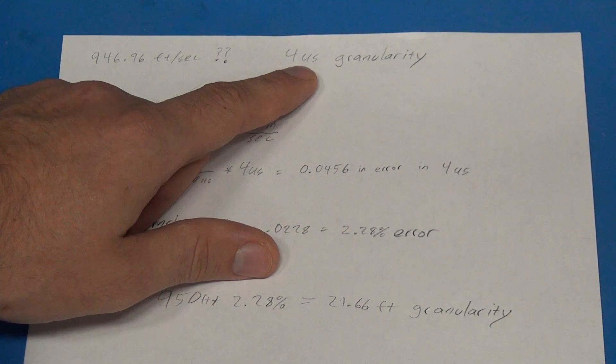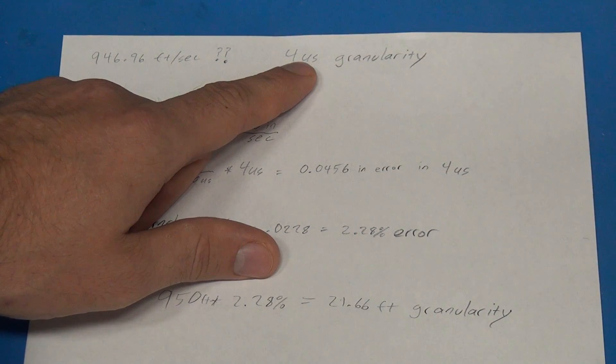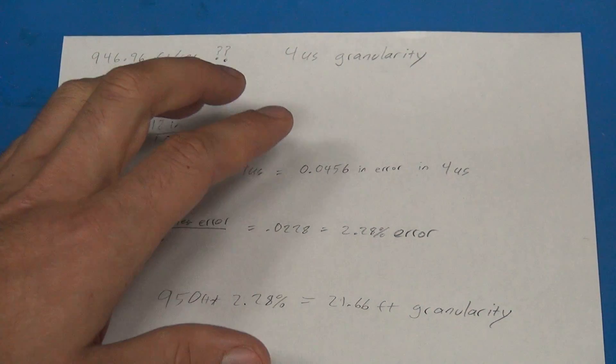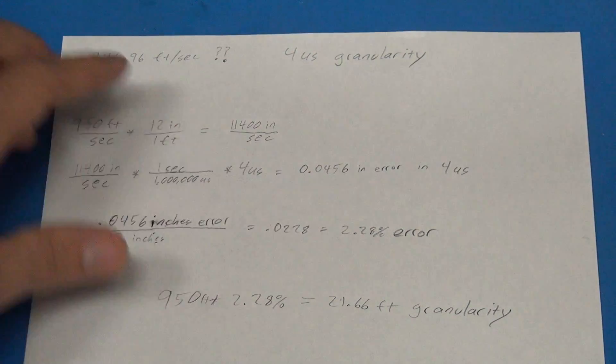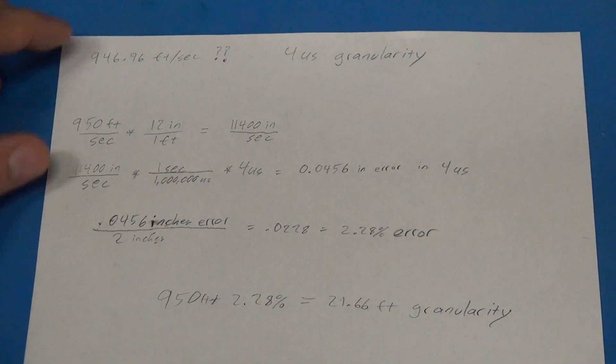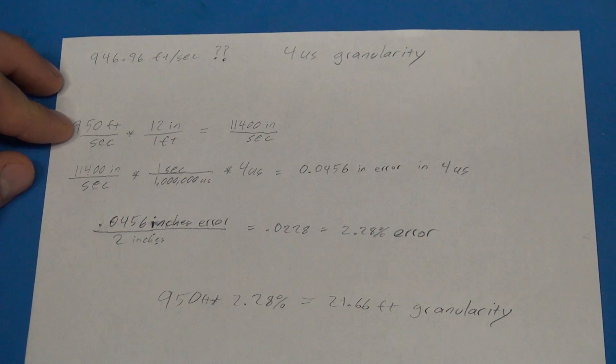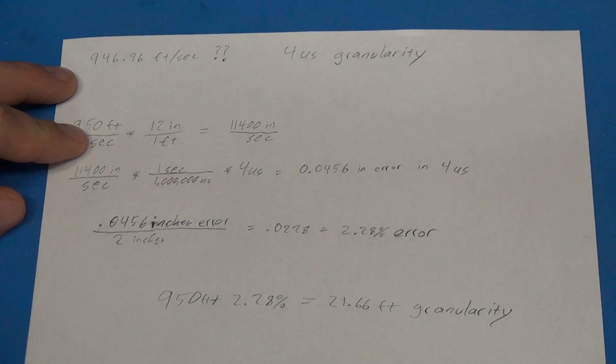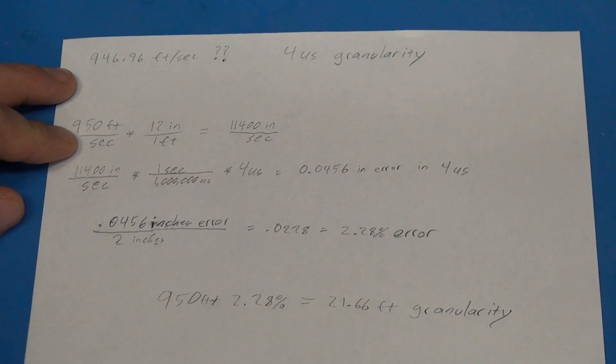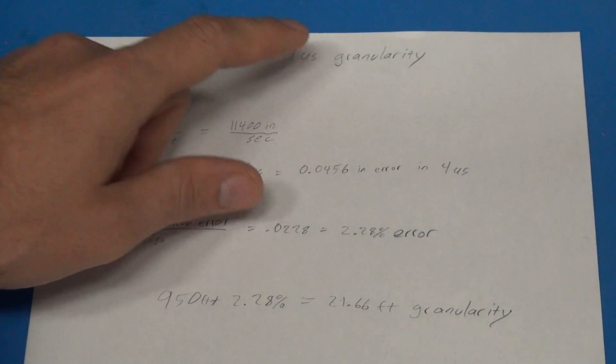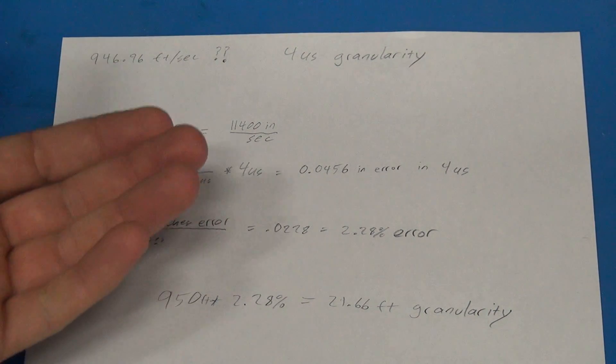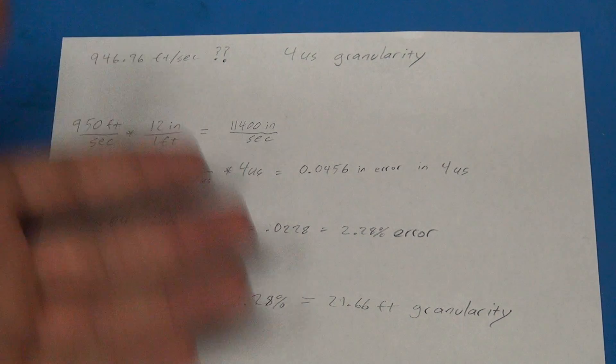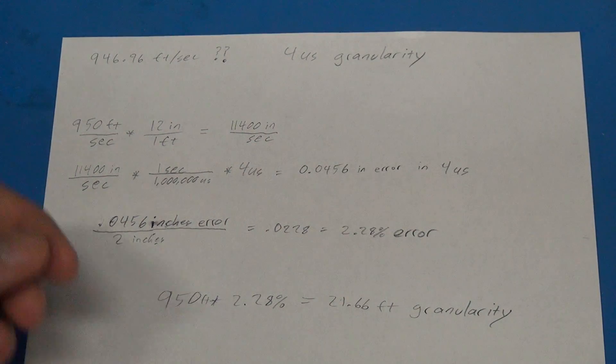The only way to really get around this is to use a faster microcontroller. But with the current camera X and the current projectile sensor, this is just a hard limit. So at this point I was like, okay, I understand where the limitation is coming from. Let's figure out how big it is so people can decide whether the projectile sensor and the camera X will work for them. So it's all about analyzing the error of this four microsecond granularity at this point. And that's what I'm doing here. So 946 feet per second is close to 950 feet per second. So that's where I started with the math part.